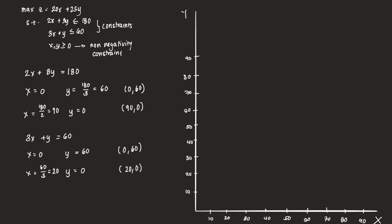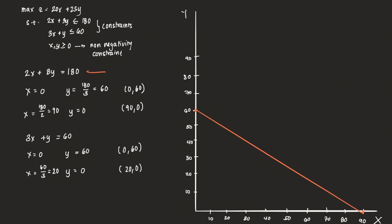Let's bring up a graph. The red line will represent our first constraint. We plot the point (0, 60) and then (90, 0), and connect those two points. That represents our first constraint, which is 2x plus 3y less than or equal to 180.